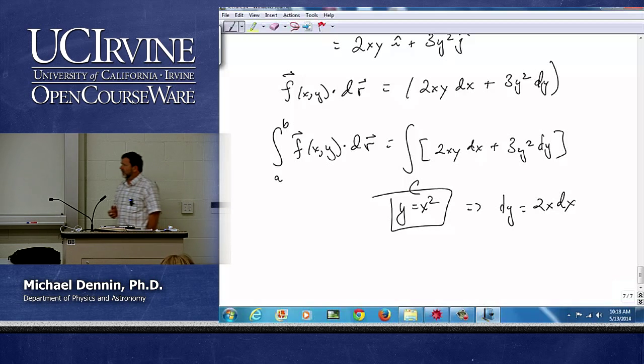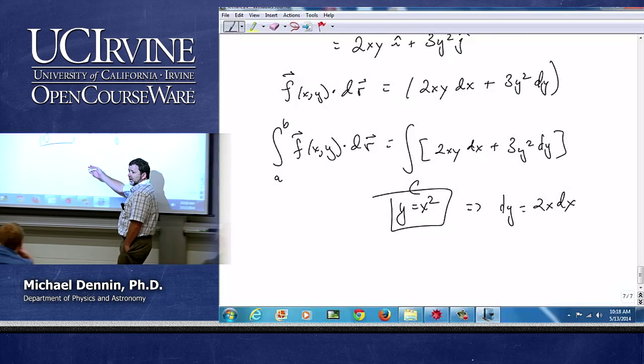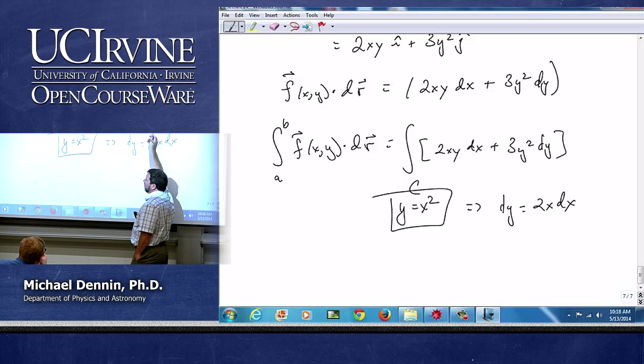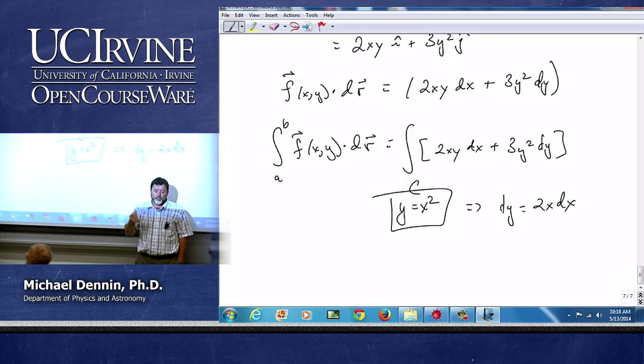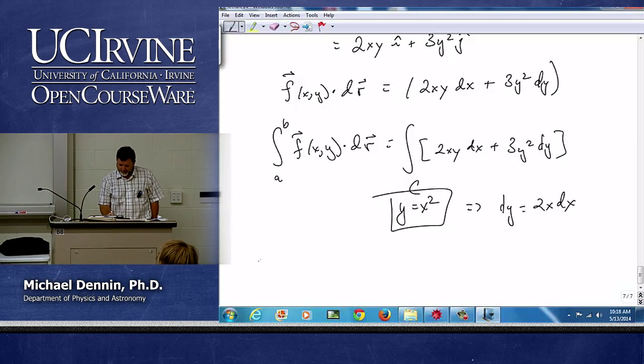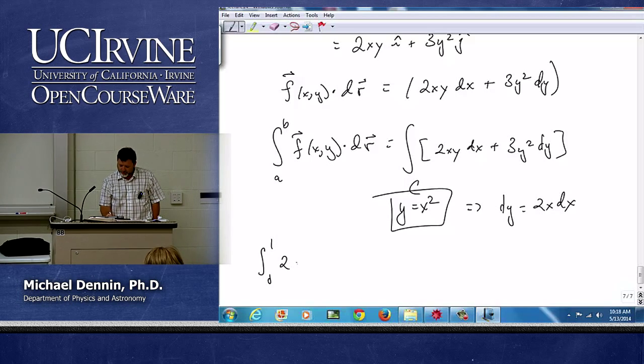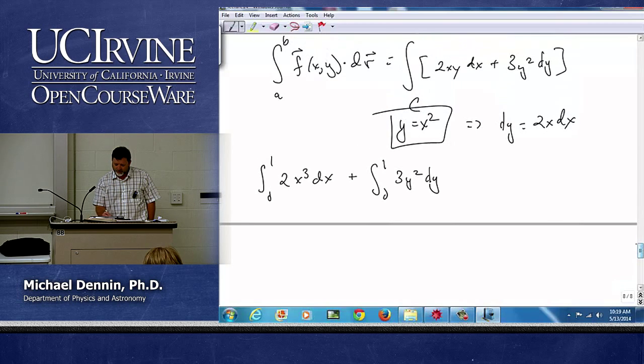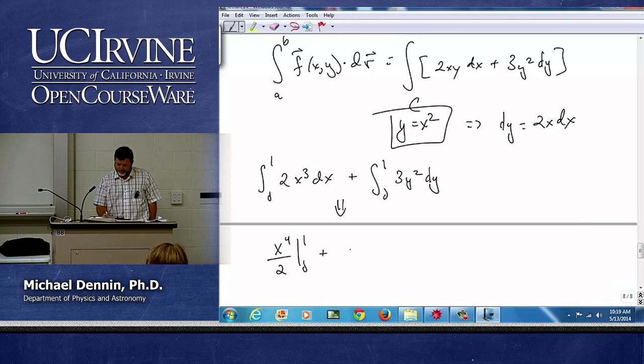Now, it turns out this is kind of a fun case. I can also parametrize with y as my parametrization variable. So this integral I can just do 3y squared dy. There's no issues with it. This one I just have to plug in y equals x squared. So one way I could do this is the integral from 0 to 1 of 2, now y equals x squared, so 2x cubed dx, plus the integral from 0 to 1 because, again, y equals 1 at x equals 1 for this curve of 3y squared dy. And if I do that, I'm going to get x to the 4th over 2 from 0 to 1 plus y cubed from 0 to 1, which is 1 and a half.